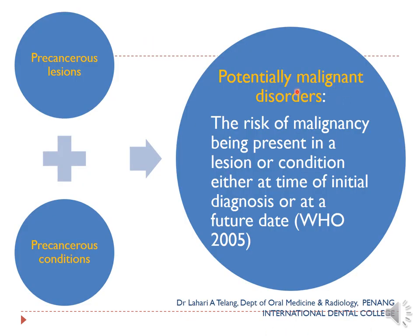When talking about potentially malignant disorders, all precancerous lesions and precancerous conditions have now been combined into one group called potentially malignant disorders. These are disorders in which the risk of malignancy is present in the lesion or condition either at the time of initial diagnosis or at a future date. The lesion itself is not malignant but can potentially turn malignant.